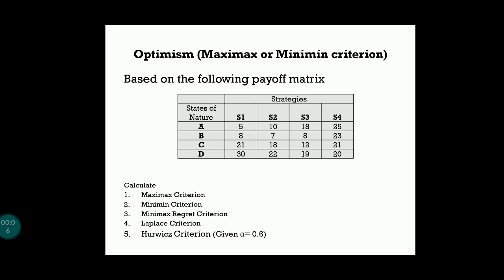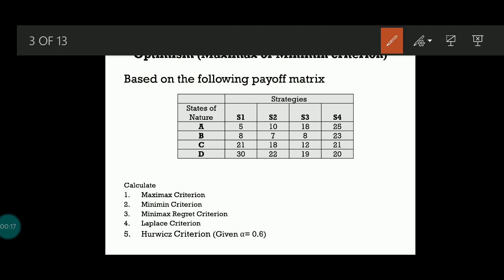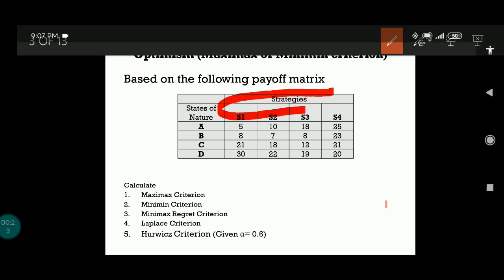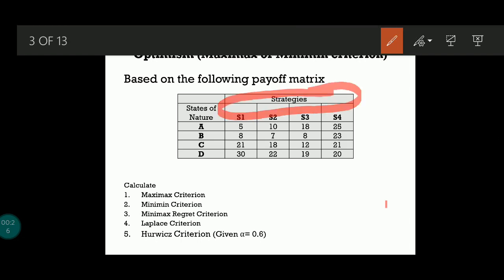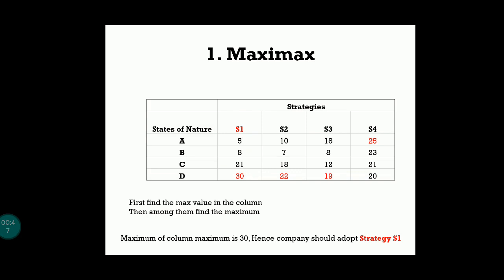The first question is based on a payoff matrix and you're supposed to find five different criteria: maximax, maximin, and others we'll look at later. First, let's understand what a payoff matrix is. In the payoff matrix, strategies are on the columns and states of nature are on the rows. You must rewrite the question so strategies come on the columns and states of nature on the rows.